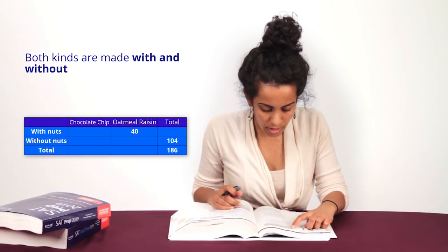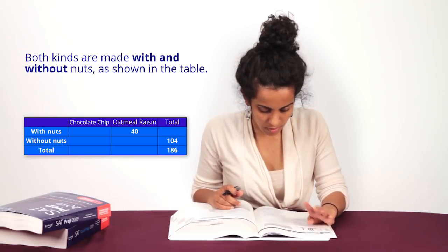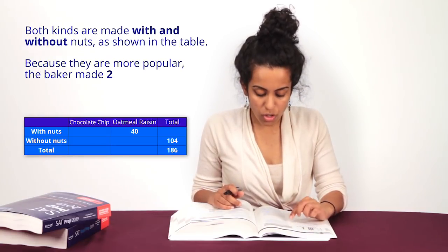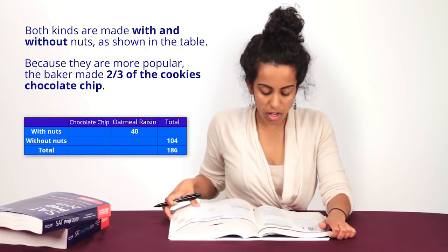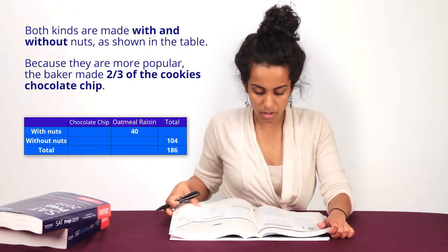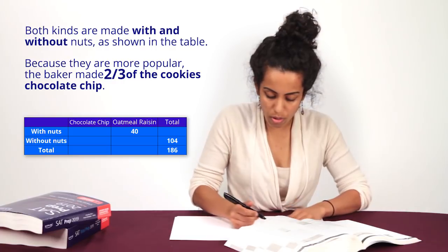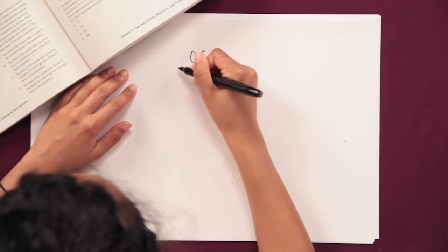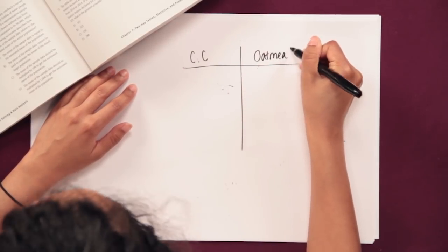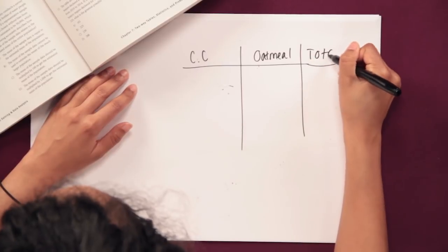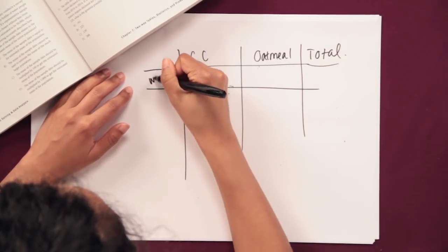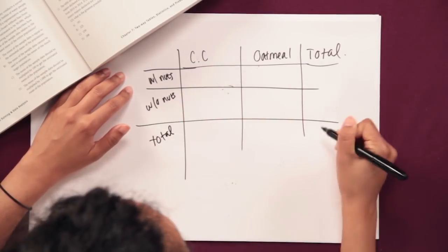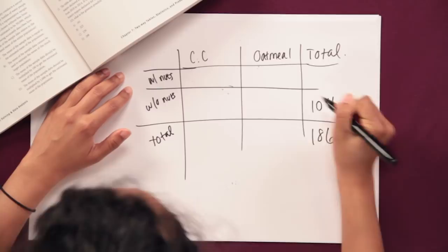And both kinds are made with and without nuts. Okay, so they've already set it up for me. Because they are more popular, the baker made two-thirds of the cookies chocolate chip. So that means two-thirds of the total number of cookies are chocolate chip. So we got chocolate chip, we got oatmeal, and we got our total. And then left-hand side with nuts, without nuts, and our total. Great, and they've already given us some information filled in.